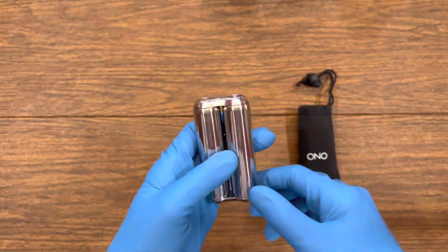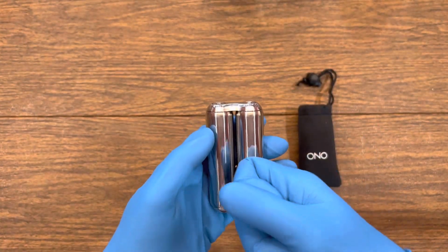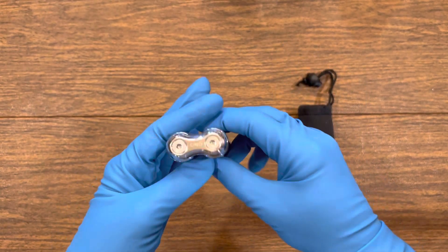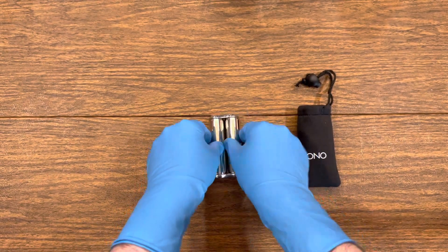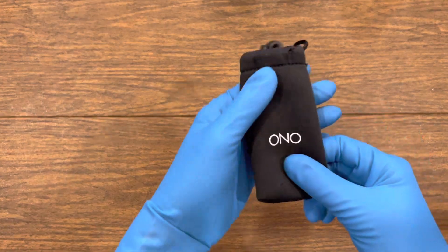D is for design slash durability. This Ono Roller is made of a great quality stainless steel and comes with a carry case for easy transport.